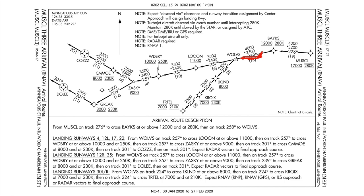The next point is Wolves intersection. The arrival route description says: from Muscle on track 276, cross Bakes at or above 12,000 and at 280, then track 258 to Wolves intersection. That's where we start transitioning to our runway. We're going to go to the left — Lakeland intersection — and that's going to be above 8,000 feet. Notice it said 280 at Bakes and doesn't say anything else about airspeed below 10,000 feet, so you do need to slow to 250 knots. That is implied by FAR 91.